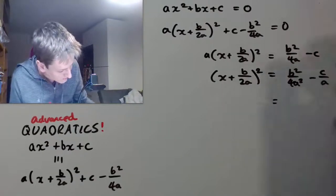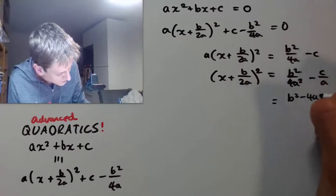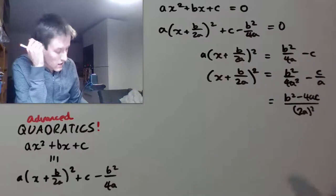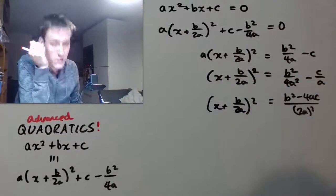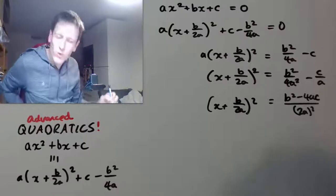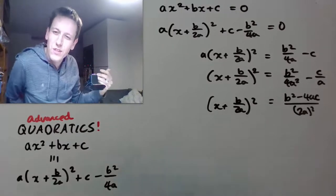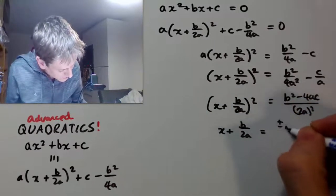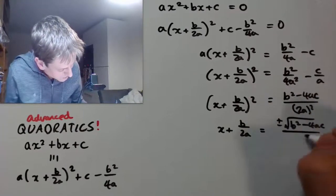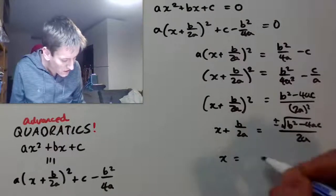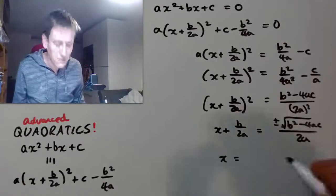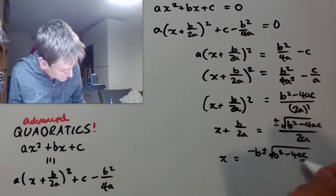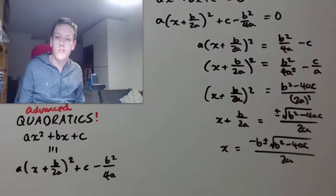And I can take the right hand side here and combine it into a single fraction. So b squared minus 4ac. And let's write the bottom 4a squared as 2a all squared. So I've got x plus b over 2a squared is equal to all of this. If I take the square root of both sides, so I do here get plus or minus the square root. So I have x plus b over 2a equals plus or minus the square root of b squared minus 4ac divided by 2a. And finally subtract the b over 2a from both sides and combine it into a single fraction. And that gives me x equals minus b plus or minus the square root of b squared minus 4ac all divided by 2a.